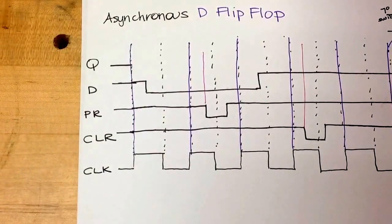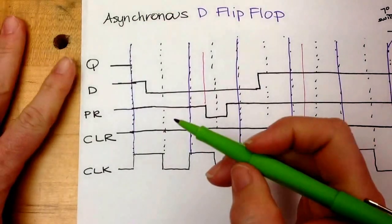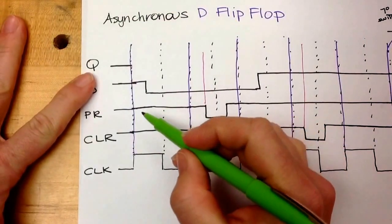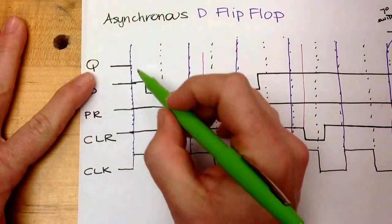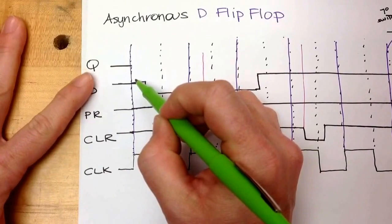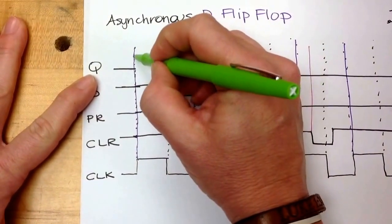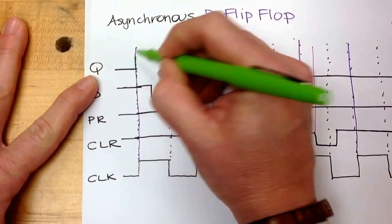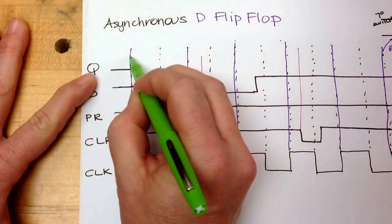So let's start to take a look at what this timing diagram might look like. I get to the first rising edge of the clock. I look at preset and clear — they're both one, so they're both turned off. D is one, so Q will be one. It's going to go up to one and start to travel across.